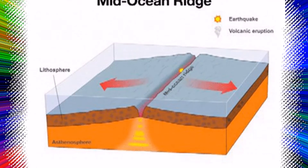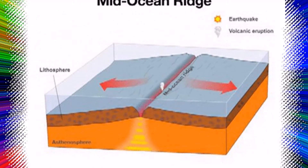The first type appears as broad bulges in the oceanic crust known as ocean ridges. The second set of features was revealed as deep and narrow linear troughs known as oceanic trenches. The third type occurred in seismically active fracture zones and became known as transform faults.